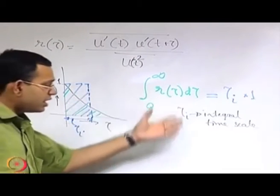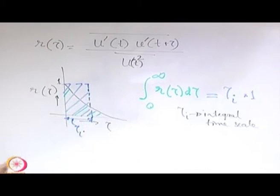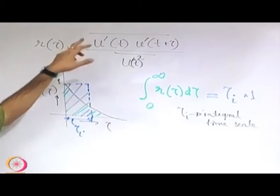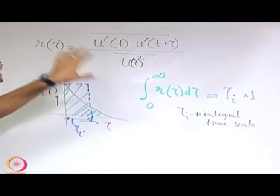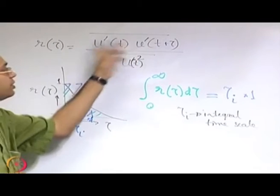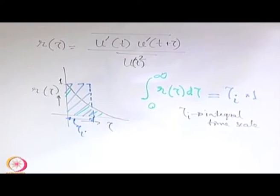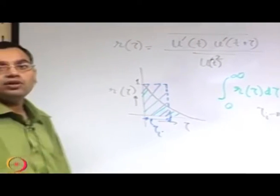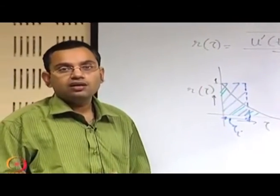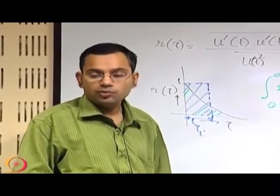Similar scales may be obtained by considering other types of correlation functions such as cross-correlation functions, where you are trying to find a correlation between u prime and v prime. Our main emphasis here is to develop a building block for the basic statistical analysis and statistical description of turbulent flows.